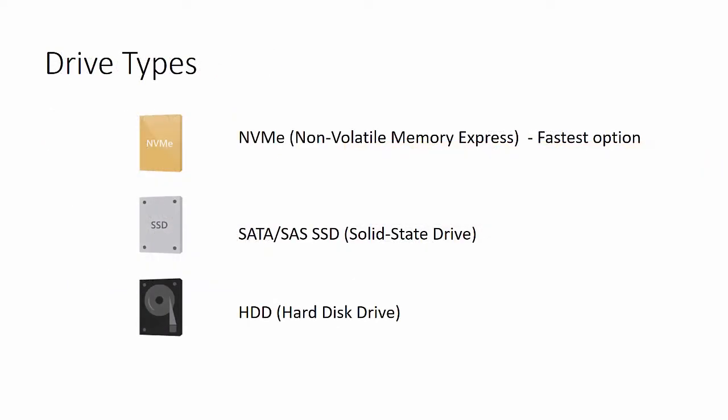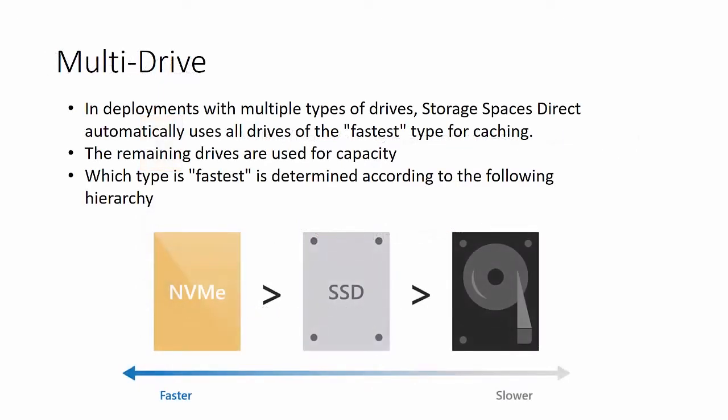Now let's look at drive types and combinations. The drive types are: NVMe — non-volatile memory express drives that connect directly to the PCIe bus — then SATA and SAS SSDs, and then hard disk drives or spinning disks. In deployments with multiple drive types, Storage Spaces Direct automatically uses all drives of the fastest type for caching, while the remaining drives are used for capacity. The hierarchy from fastest to slowest is NVMe, then SSD, then hard disk drives.